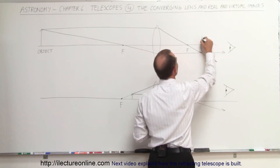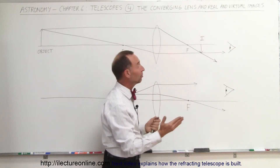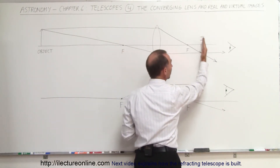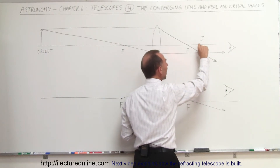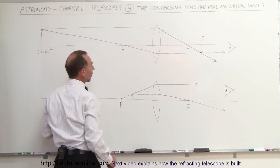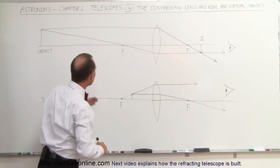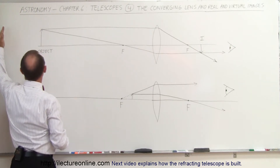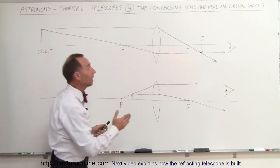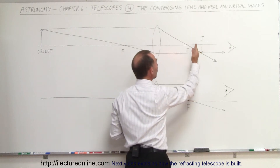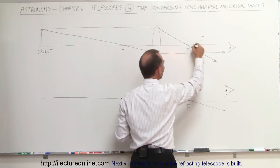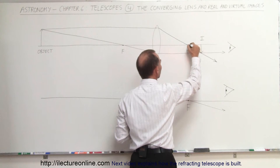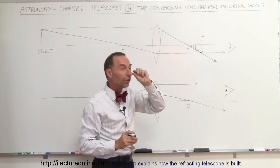An image will form on the other side of the lens. You can actually take a piece of paper and the image will actually appear on it — you can see it. The image is upside down and much, much smaller than the object. Now what happens when the object is placed further and further away? The image will then appear closer and closer to the focal point, and objects farther away will produce an image that gets smaller and smaller.